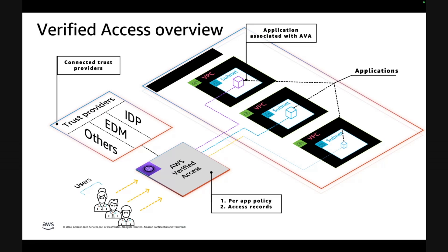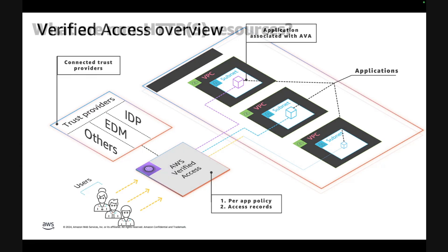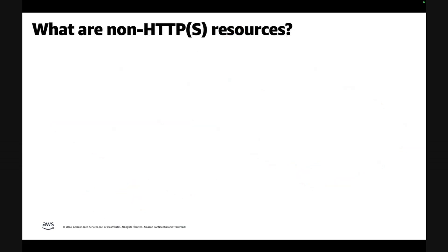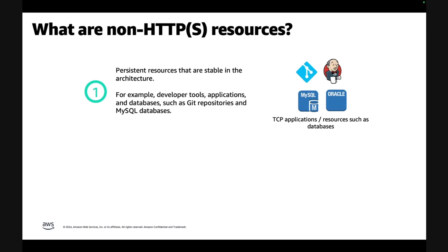Verified Access works for non-HTTP resources. Based on our customer interviews, we learned that there are two types of non-HTTP resources. The first are persistent resources, which are more stable parts of architecture. Some examples include applications, databases such as Git repositories. These resources remain a part of your architecture for a long period of time unless you explicitly migrate or upgrade from them.